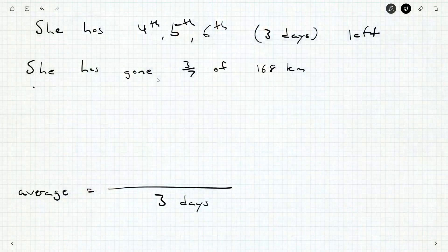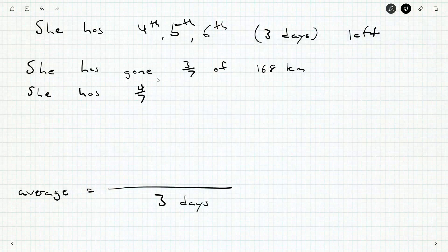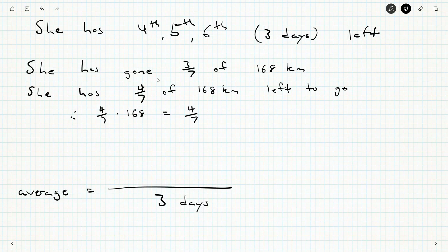So that's going to be four over seven times 168. As I already mentioned, I know from dealing with a number of hours in a week that 168 is seven times 24. When I realized that, the sevens cancel out really quickly. Four times 24 is 96 kilometers.